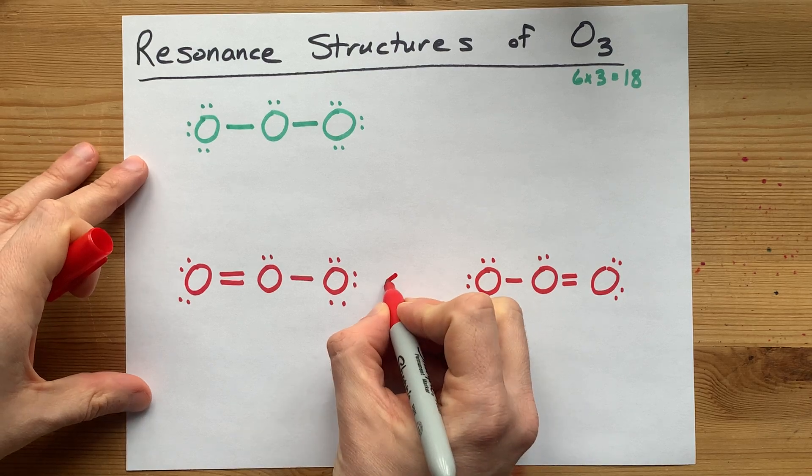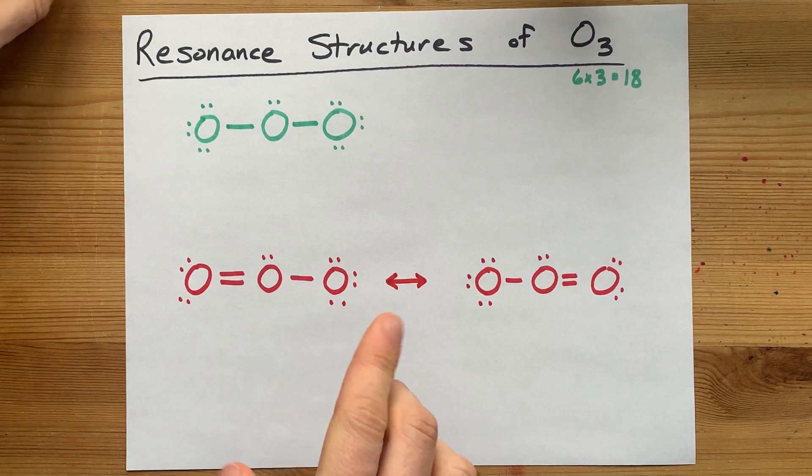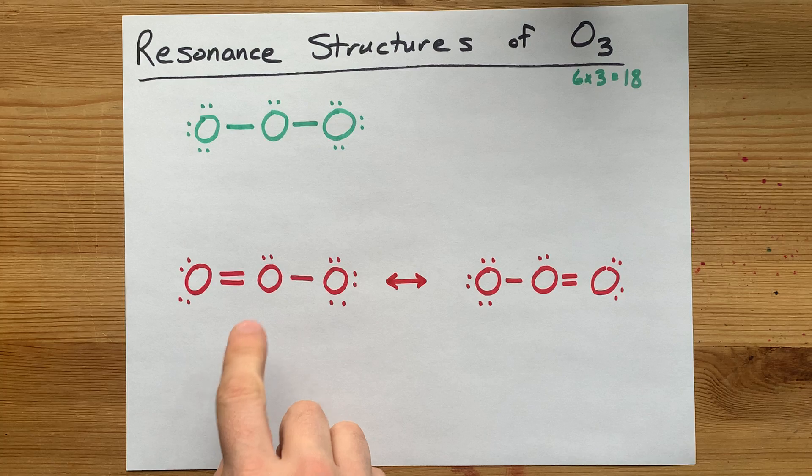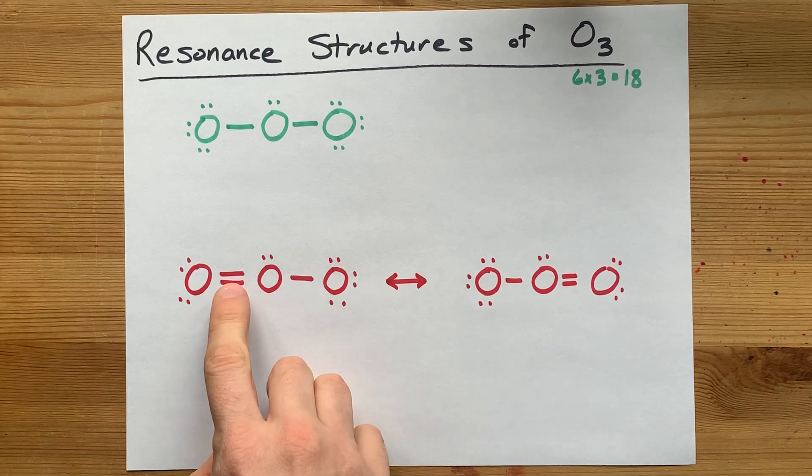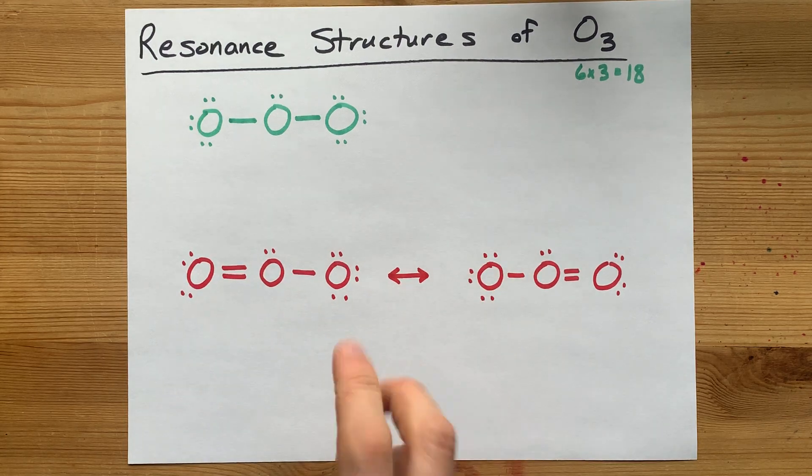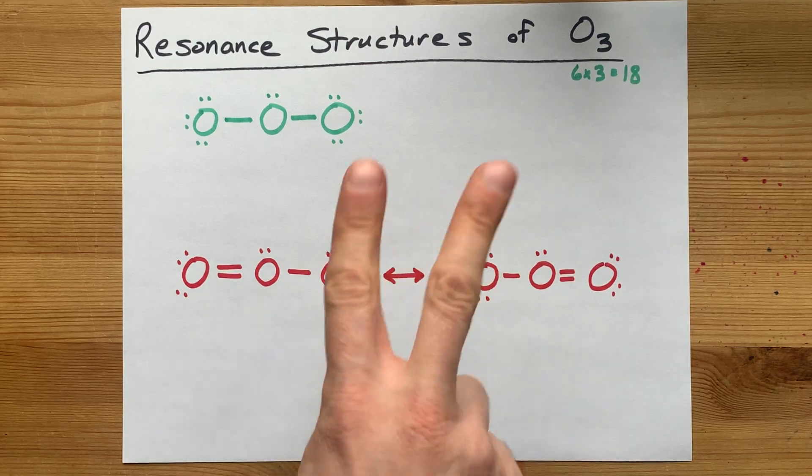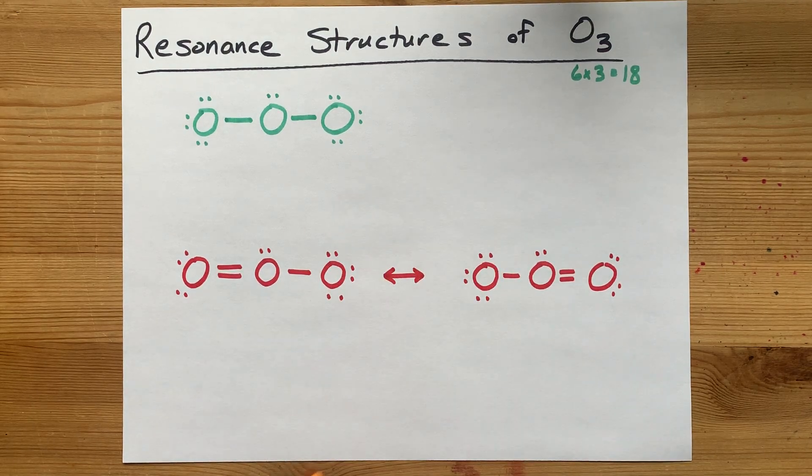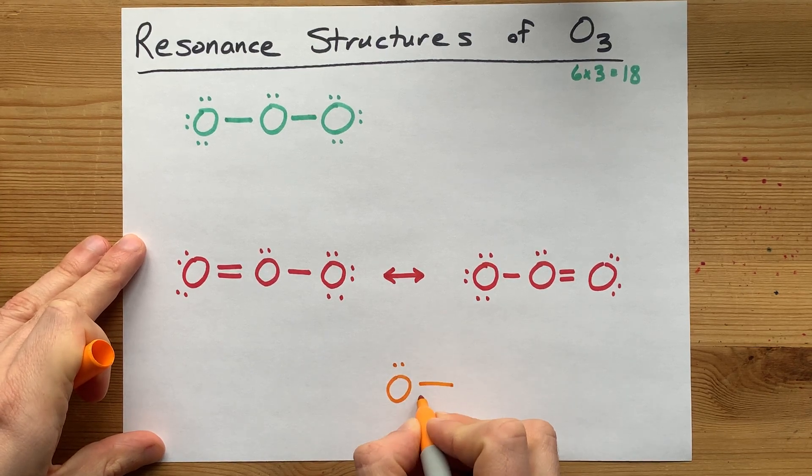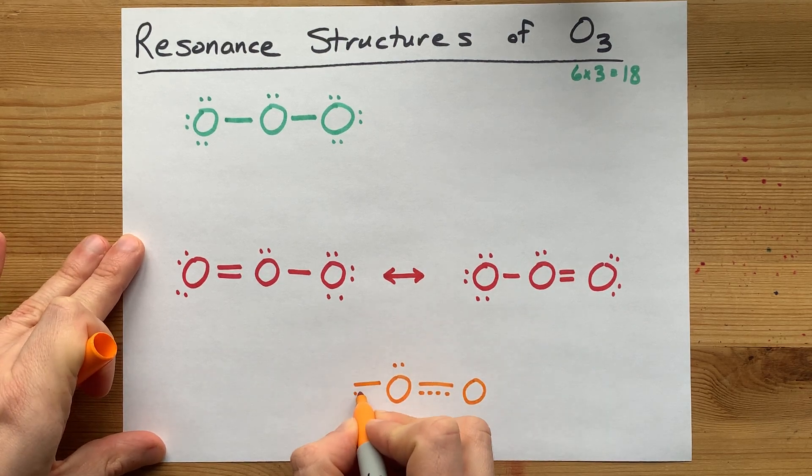To show the resonance, we give ourselves a double-ended arrow. And some teachers will have you draw a resonance hybrid in which this bond is drawn halfway between two and one, and then the other bond is drawn halfway between one and two. Those are both basically one and a half bonds. The resonance hybrid here could be drawn with one and a half bonds to each of the oxygens on either side.